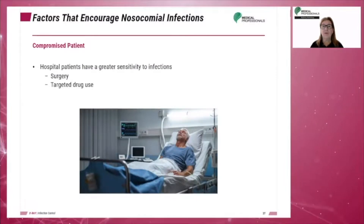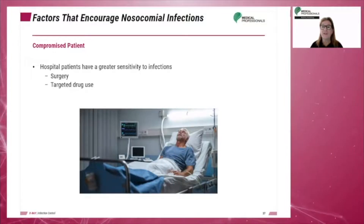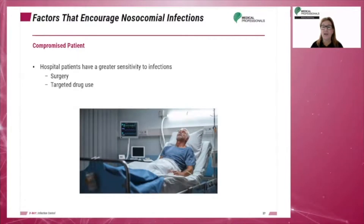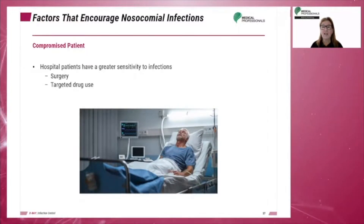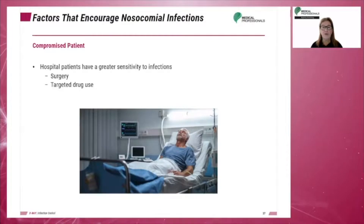Patients in the hospital may have a higher susceptibility to infection. The patient may have had a surgery recently and now presents a weakened resistance to infectious organisms because of their illness. Patients on chemotherapy, which is a drug used to treat and kill cancer cells, will also have a weakened immune system due to the toxic effects of the chemotherapy drug on the body. These patients are said to be compromised, immunocompromised, or immunosuppressed.